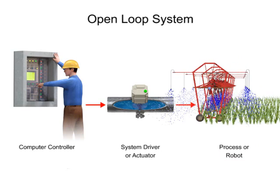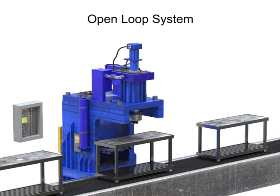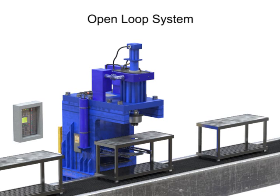Some good examples for open-loop control systems are stop-and-go conveyor systems with constant loading, and manufacturing applications with high repeatability and low variation, such as punching holes out of a piece of sheet metal or reorienting work pieces.